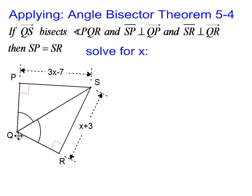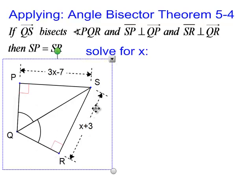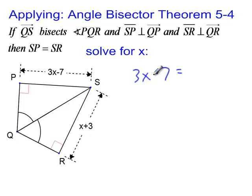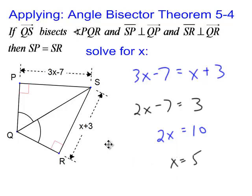Applying the angle bisector theorem says that if this bisects this angle and these line segments are perpendicular to the sides of the angle, then these two sides have to be congruent. So 3X minus 7, if they're congruent we set the two expressions equal. Subtract X from both sides, add 7 to both sides, divide both sides by 2. You get X is 5, which tells you this side would have to be 8, and so would this.